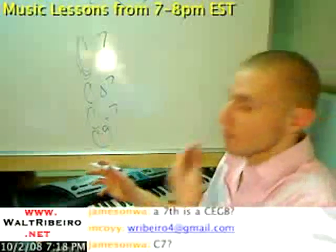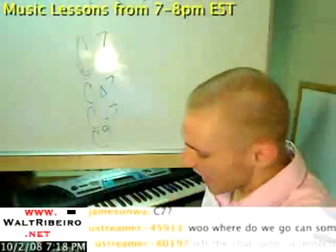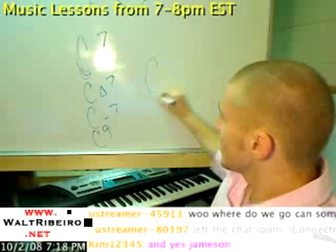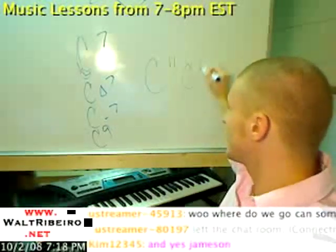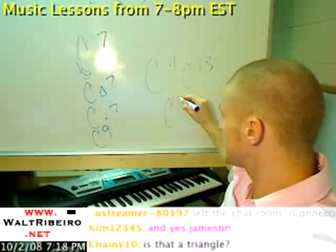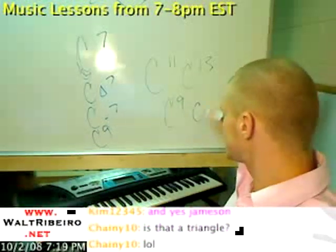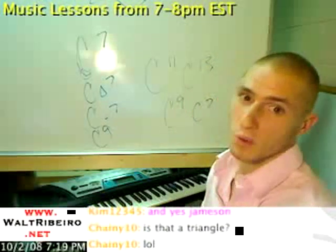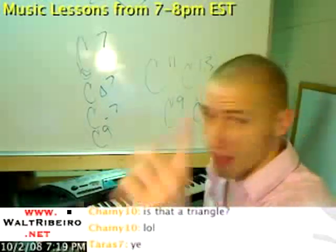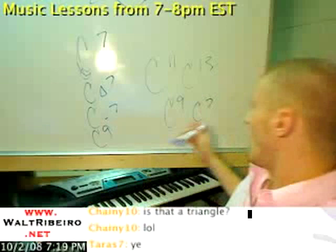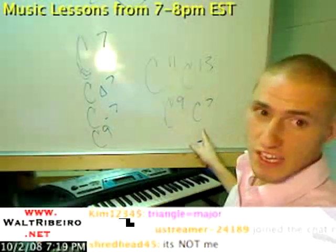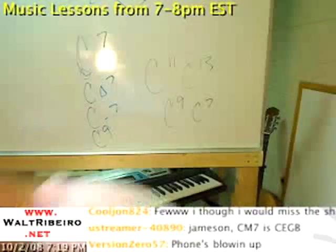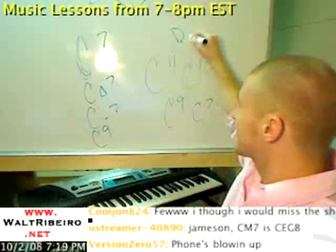Now, C9 is not exactly a seventh chord, but it is a type of dominant chord. There's a cool little trick: whenever you have just the letter and a number — whether it's C11, C13, C9, or C7 — when it's only the letter and the number, that means it's one thing: a dominant chord.